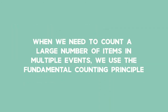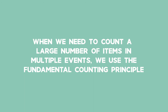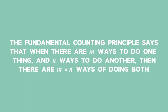When we need to count a large number of items in multiple events, we use the Fundamental Counting Principle. The Fundamental Counting Principle says that when there are m ways to do one thing and n ways to do another, then there are m times n ways of doing both.